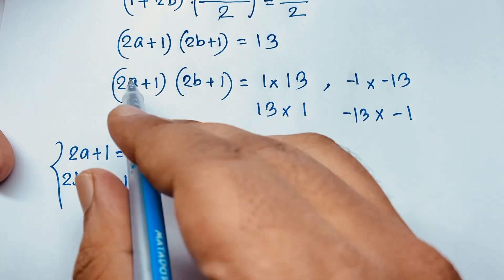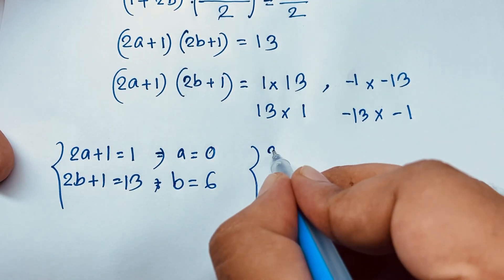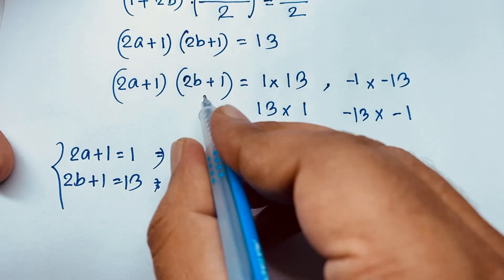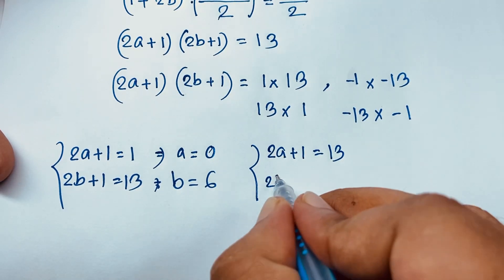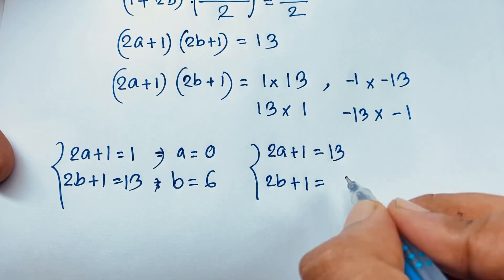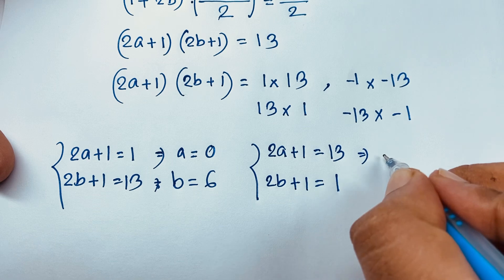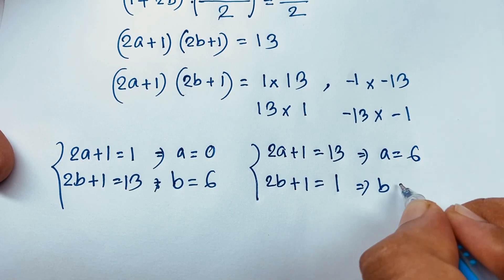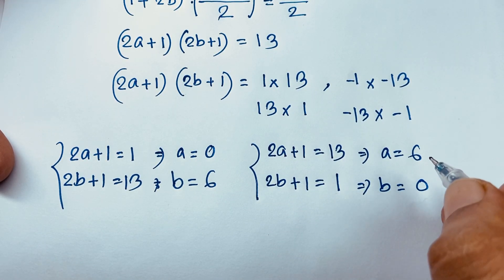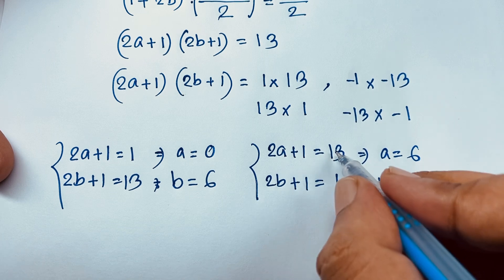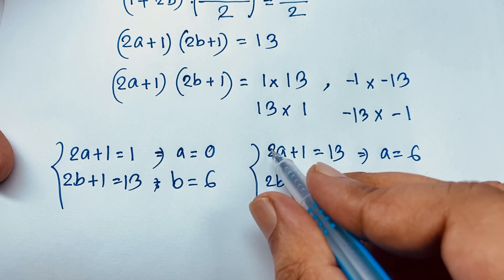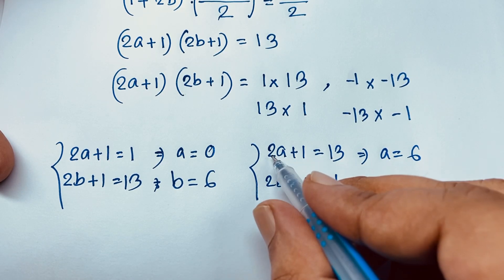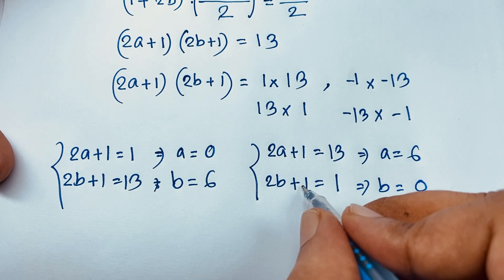Case 2: 2a + 1 = 13 and 2b + 1 = 1. Then a = 6 (since 13 - 1 = 12, divided by 2 = 6) and b = 0 (since 1 - 1 = 0, divided by 2 = 0).